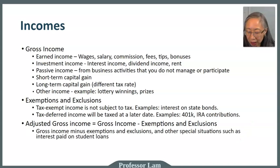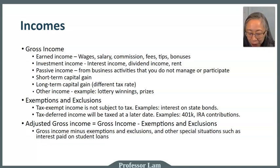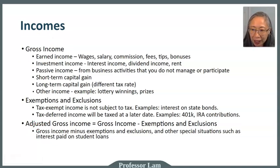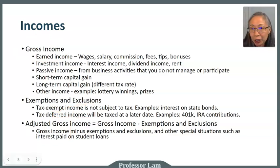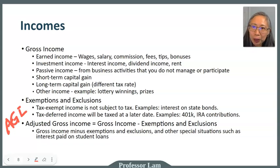In addition to tax exemption and tax deferment, there are special situations that may qualify you for more exclusions, which further reduce your adjusted gross income. You start with gross income, subtract any exemptions and exclusions including deferred income, and arrive at your adjusted gross income — sometimes referred to as AGI. When applying for loans, lenders will often ask for your AGI.